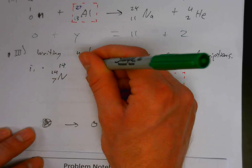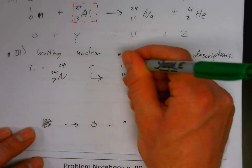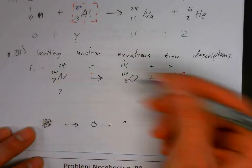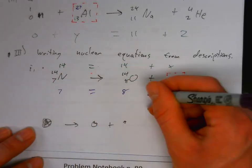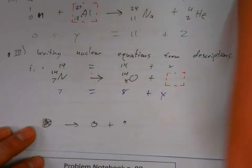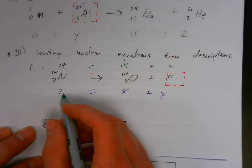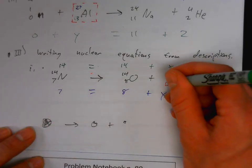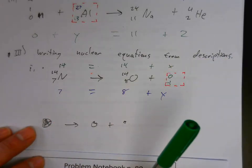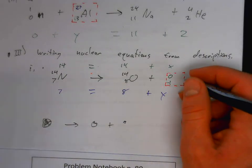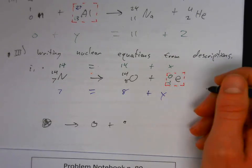Now we go through the same process as before: 14 equals 14 plus x, and seven equals eight plus y. So x equals zero and y equals negative one. We have an electron, zero over negative one, or beta particle.